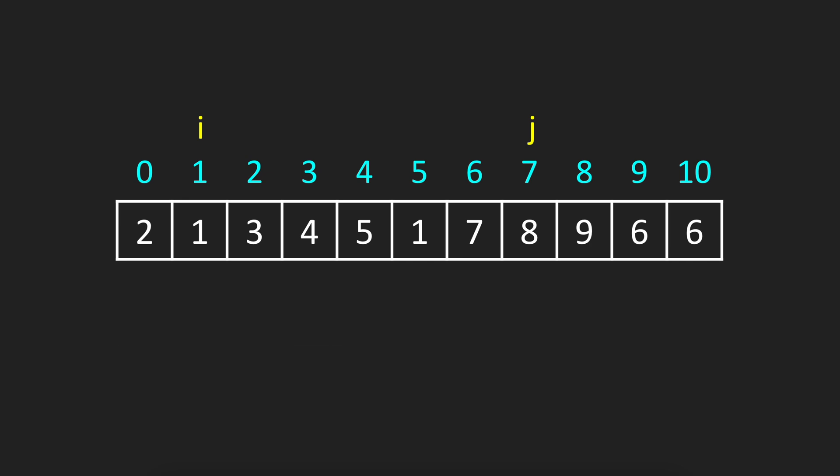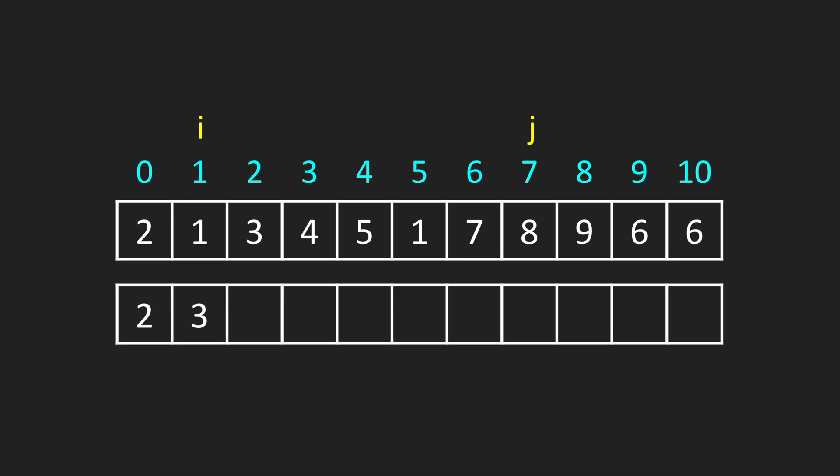For the prefix sum we are going to create an array with exactly the same size and for each case we are going to add the sum of all previous elements. For example, the first element is 0. The first index for 0, the value is 2.